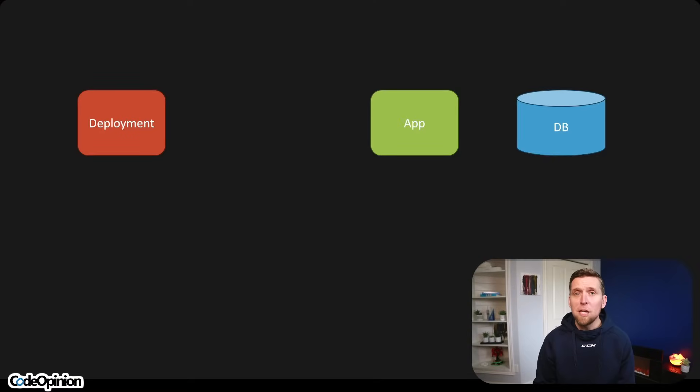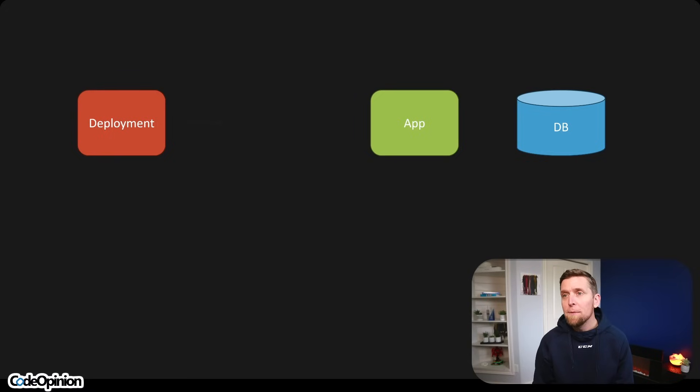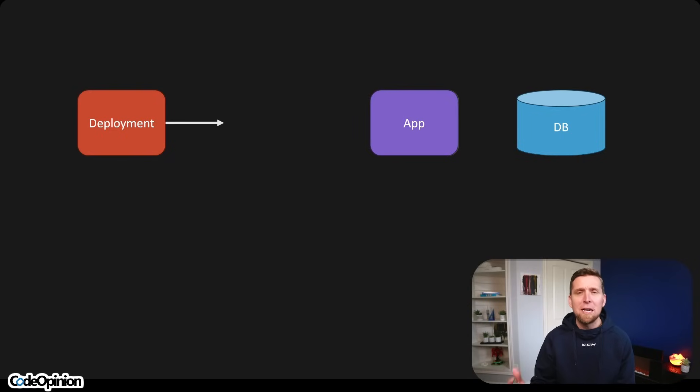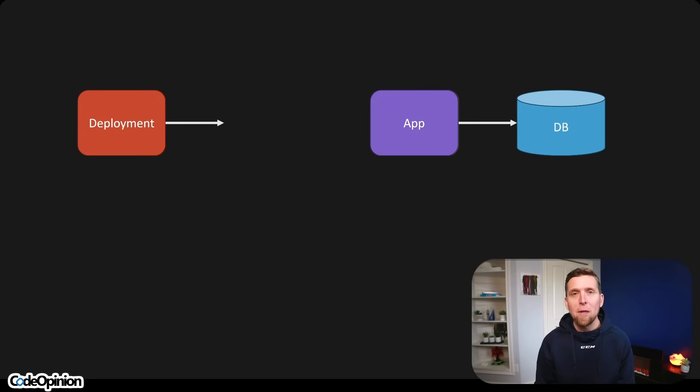With event streams and event stores, there's really no schema change to be made because it's all defined in code — you're just deploying your app code and making it backwards compatible or being able to upcast. If you're making a change to a relational database, one option is having your schema change and app code deployed at the same time, meaning at app startup, before it handles any requests, the app itself makes the schema change. After that's done, it can proceed to handle requests.